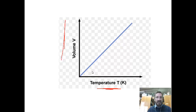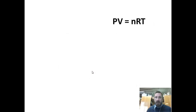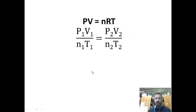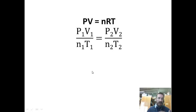When do we see this with the Ideal Gas Law? Here's our Ideal Gas Law: PV equals NRT. And we've also rearranged it to say P1 times V1 over N1 times T1 is equal to P2 times V2 over N2 times T2.